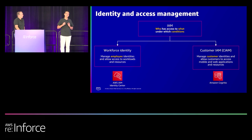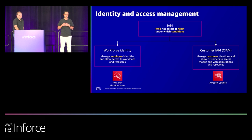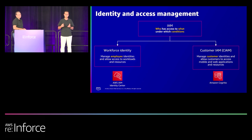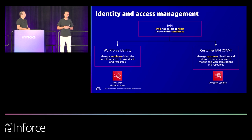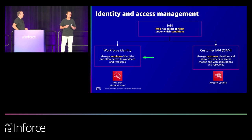IAM — Identity and Access Management — is about controlling who is accessing what under which circumstances. The way you handle it differs depending on the type of identity. We distinguish two types: workforce identity, which is your employees and partners accessing AWS resources and services, and customer identity and access management for your mobile or web applications. The AWS service for customer identity is Amazon Cognito, and for workforce identity it's AWS IAM Identity Center, which is the focus of this session.